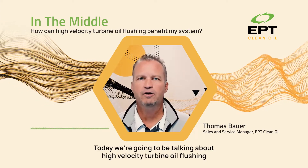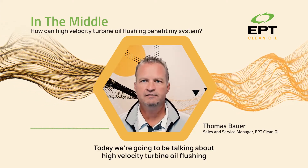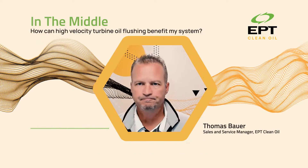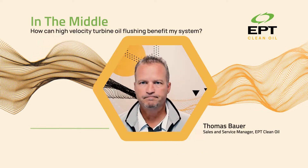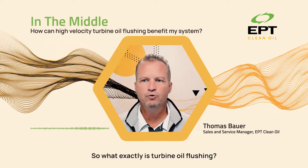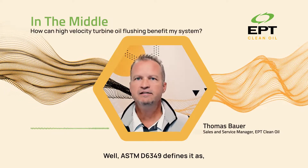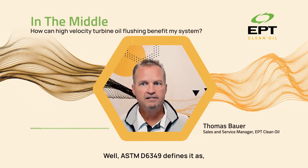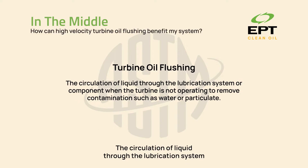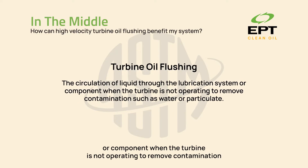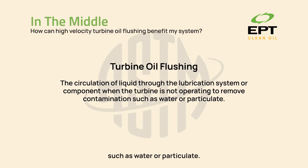Today we're going to be talking about high velocity turbine oil flushing and how it can benefit your system. ASTM D6349 defines it as the circulation of liquid through the lubrication system or component when the turbine is not operating, to remove contamination such as water or particulate.